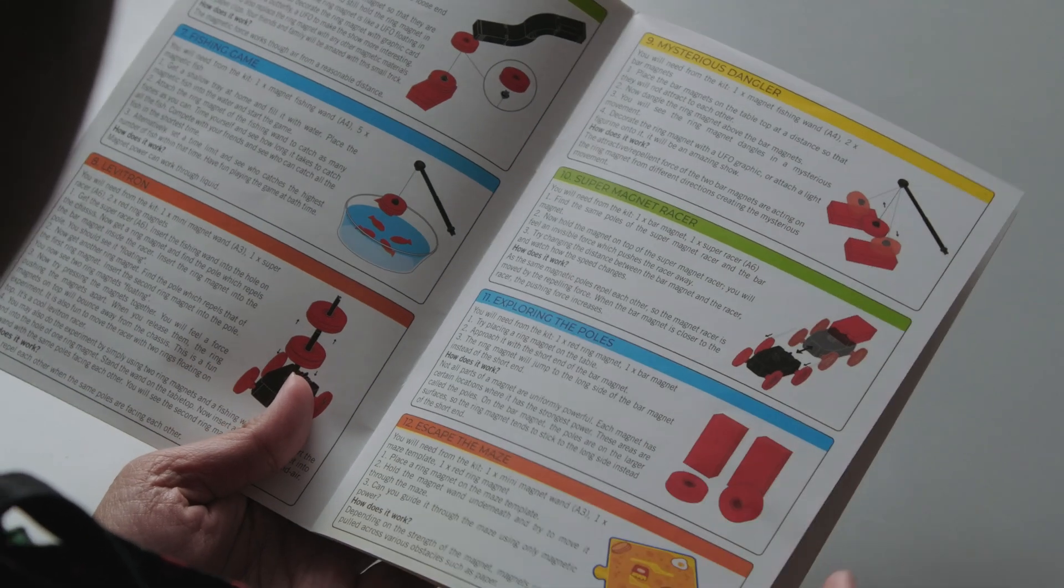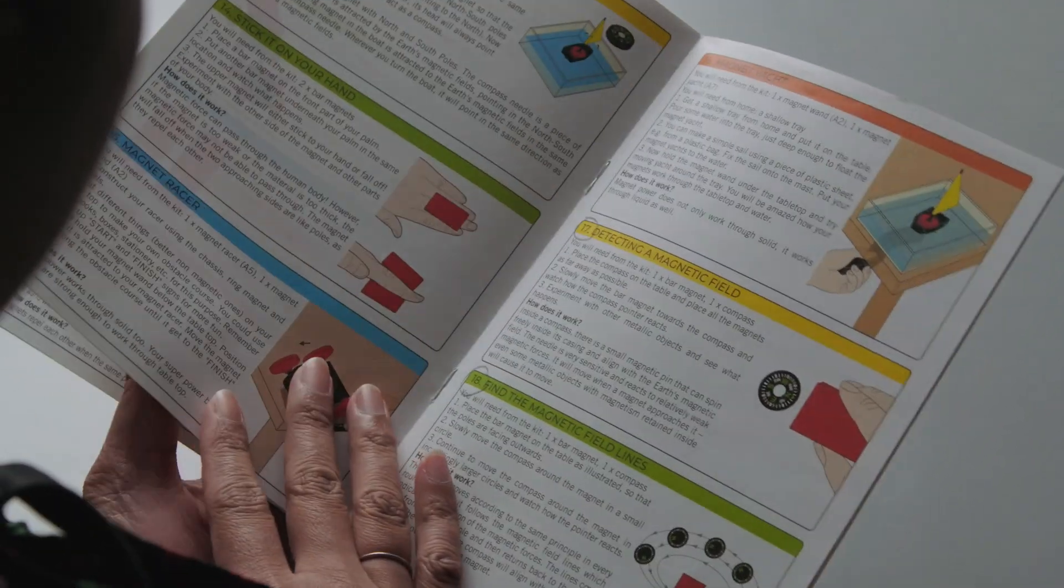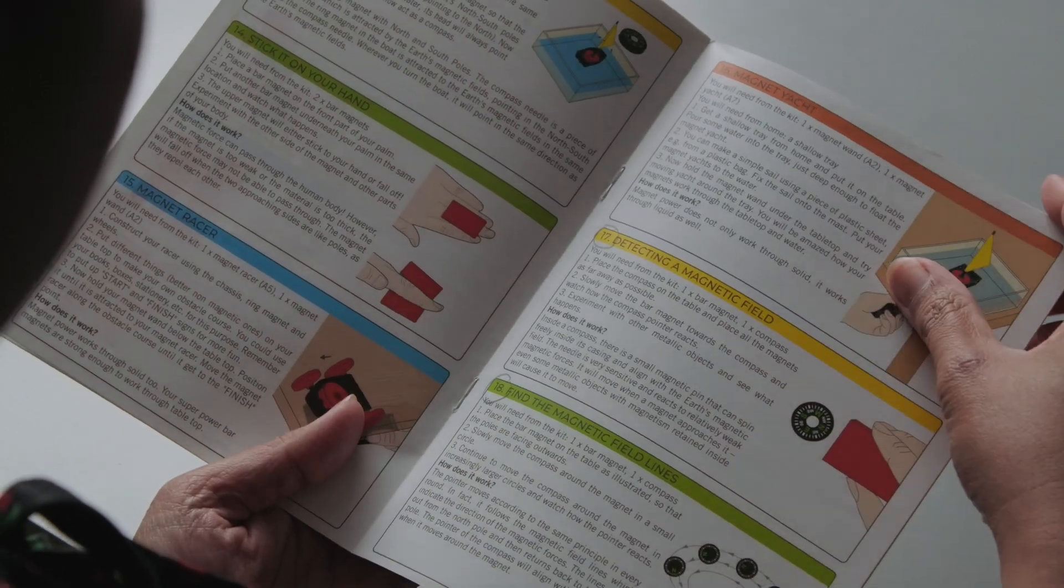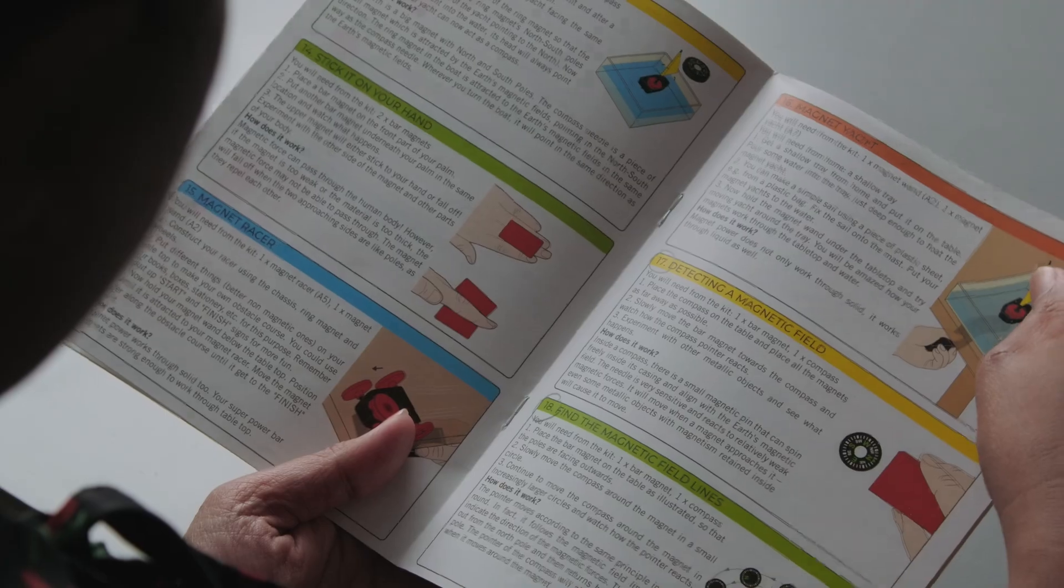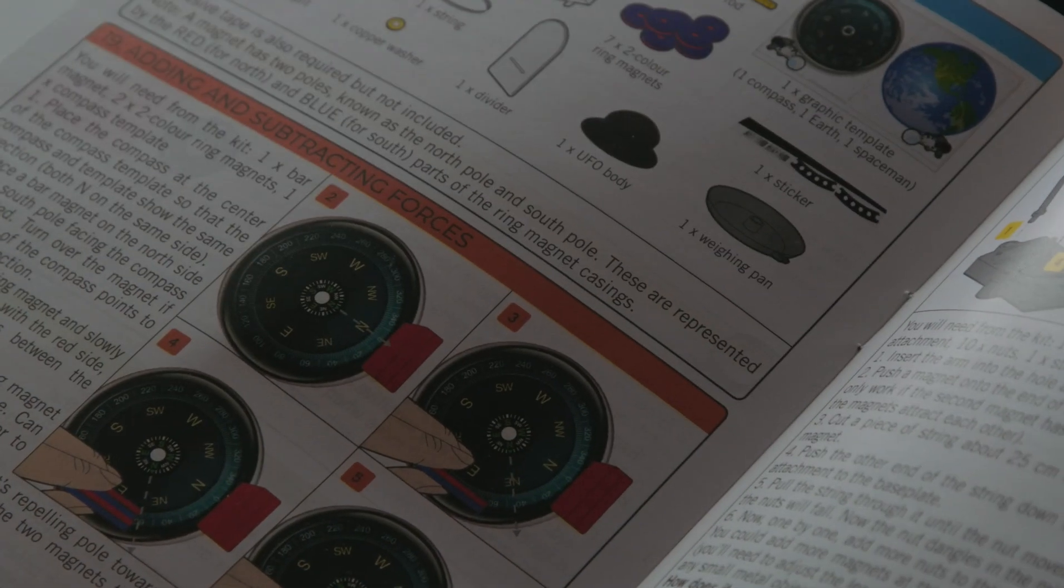The instructions in the book are easy to understand because they are step-by-step instructions with pictures attached. There are also explanations about how the games or experiments work.